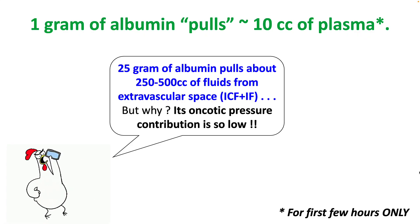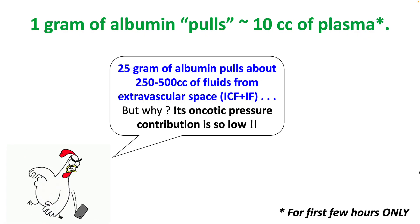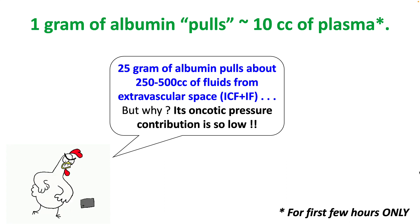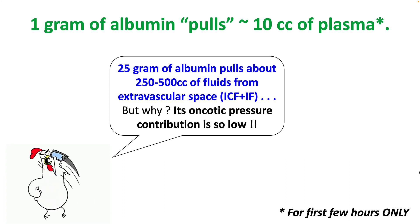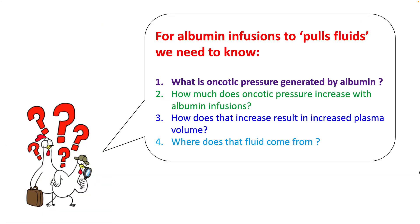We learned that a gram of albumin pulls about 10 cc of plasma. However, you'll understand that the oncotic pressure of albumin is pretty low, so how is it able to pull off this feat? To know why albumin is able to pull fluid into the intravascular compartment you have to answer four basic questions: what is the oncotic pressure generated by albumin, by how much does the oncotic pressure increase with albumin infusion, how does that increase result in increased plasma volume, and finally where does all that fluid come from?